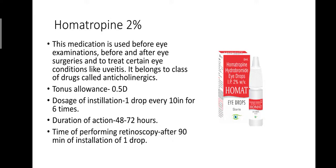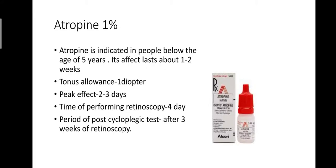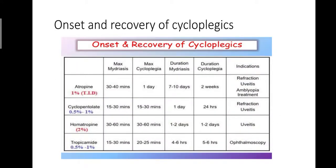Atropine is the strongest cycloplegic. It is indicated in children below the age of five years. Its effect lasts about one to two weeks, with a tonus allowance of one diopter. The peak effect is at two to three days, retinoscopy is performed on the fourth day, and the post-cycloplegic test is performed three weeks after retinoscopy.